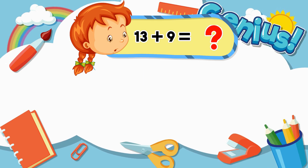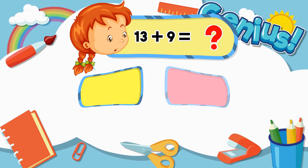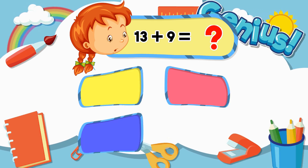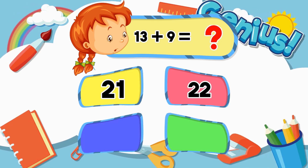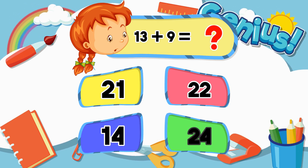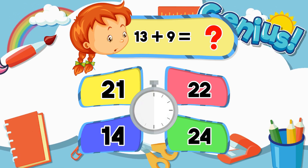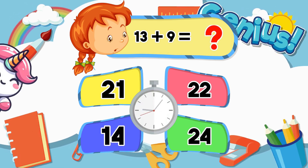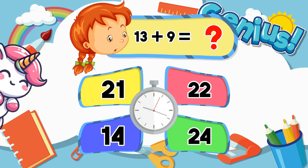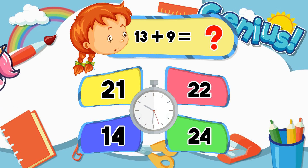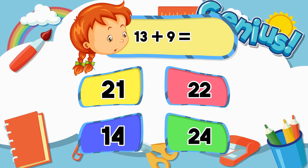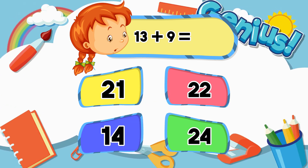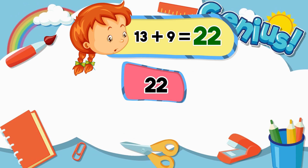What is 13 plus 9? Options: 21, 22, 14, 24. The correct answer is 22.